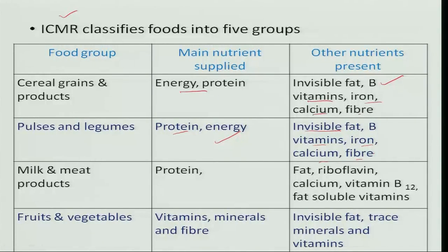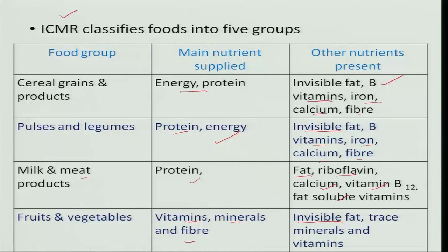The third group is meat and milk products, which is mainly for protein supply and is also rich in fat, riboflavin, calcium, vitamin B12, and fat-soluble vitamins. The fourth group is fruits and vegetables, which supply vitamins, minerals, and fiber, along with trace minerals and invisible fat in very small quantities. The fifth group is fats and sugars, where the main nutrient supplied is energy.